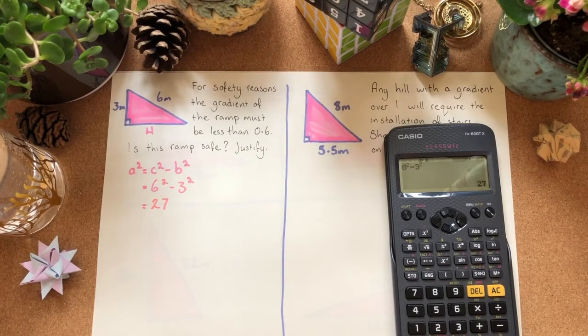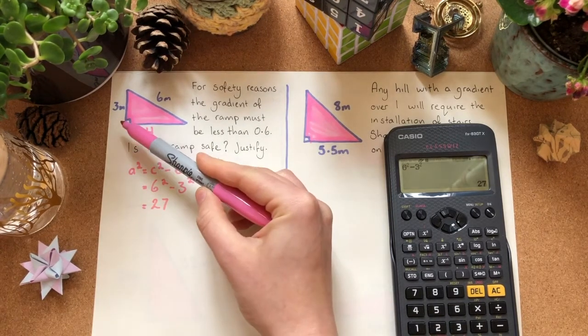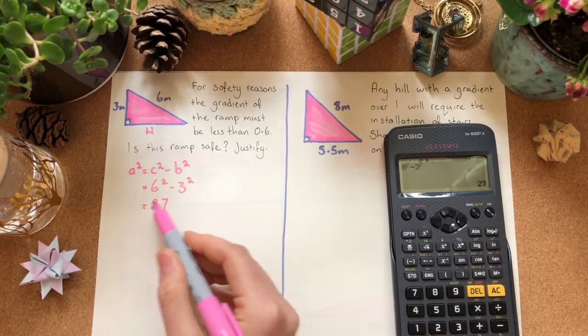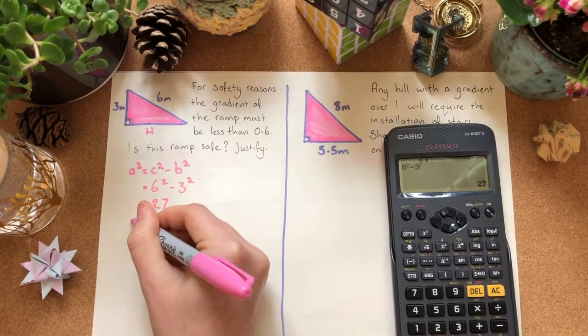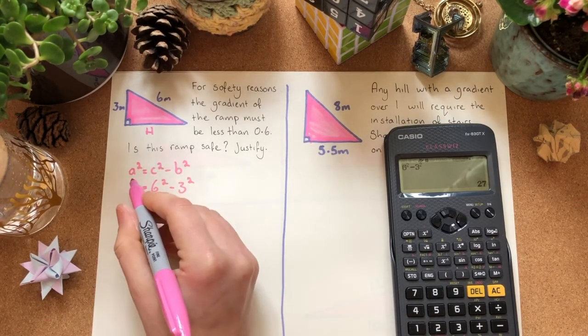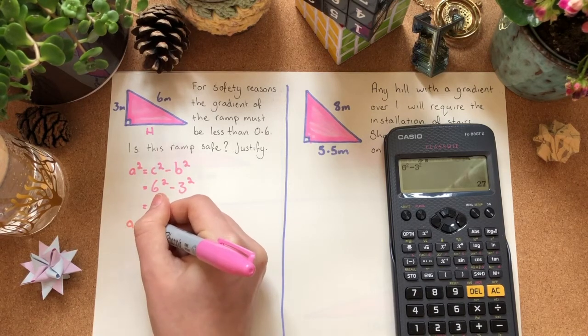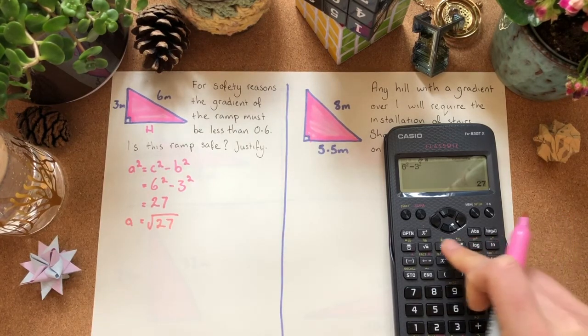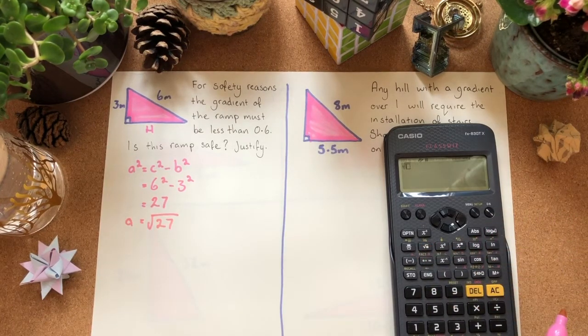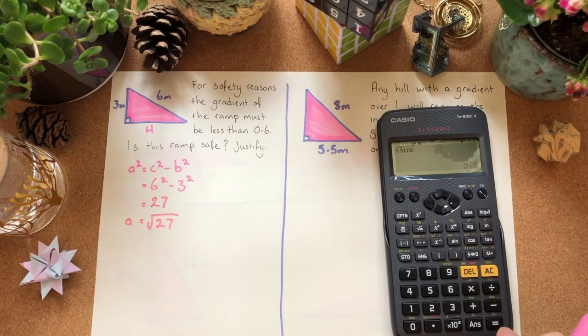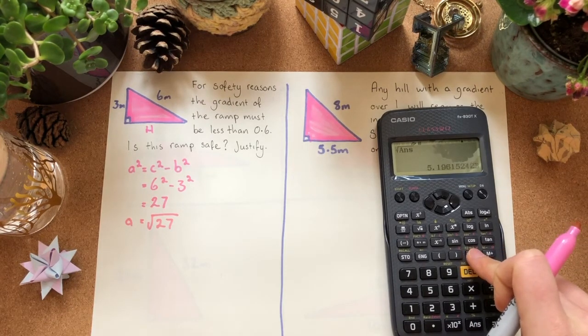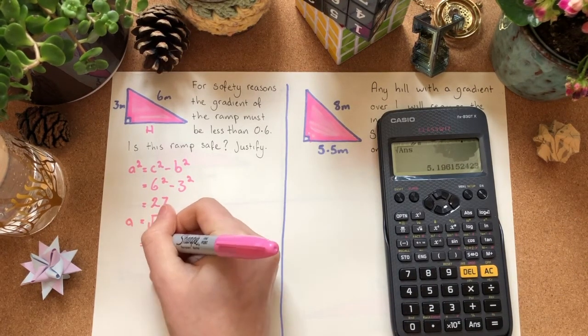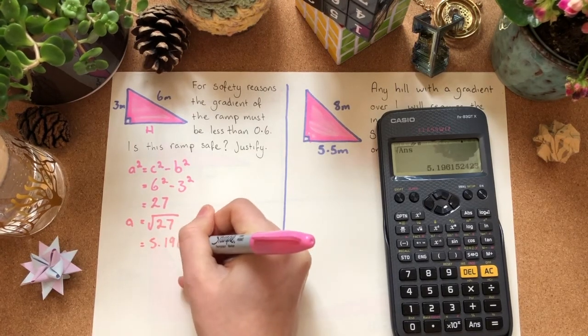Now, it wouldn't make sense to have a triangle where the height is 3, we've got a 6, and then a 27. So, you've got to think to yourself, what do I need to do further? Ah, I need to square root it. Because I've worked out a squared, and what I want to work out is a. So, I work out a, it's going to be the square root of 27. In my calculator, I can just press the square root, and then the answer button here. And that will give me 5.196 blah blah blah.